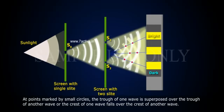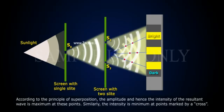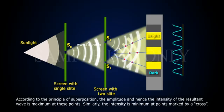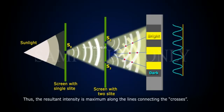Or the crest of one wave falls over the crest of another wave. According to the principle of superposition, the amplitude and hence the intensity of the resultant wave is maximum at these points. Similarly, the intensity is minimum at points marked by a cross.